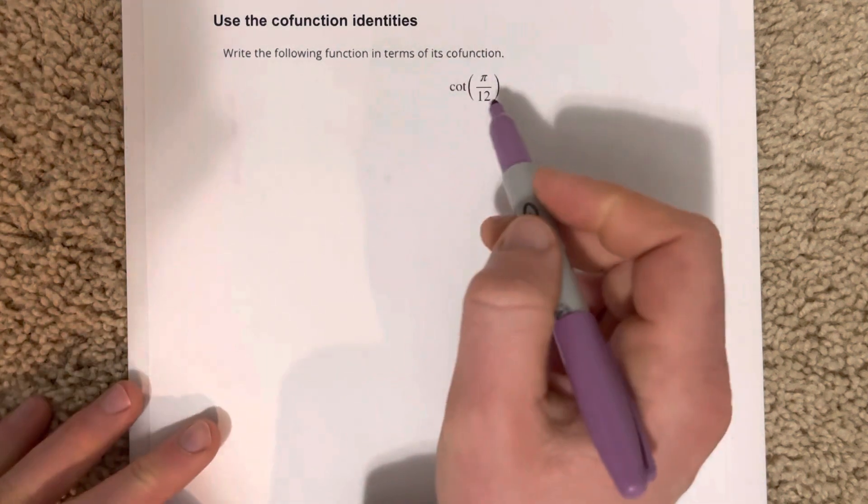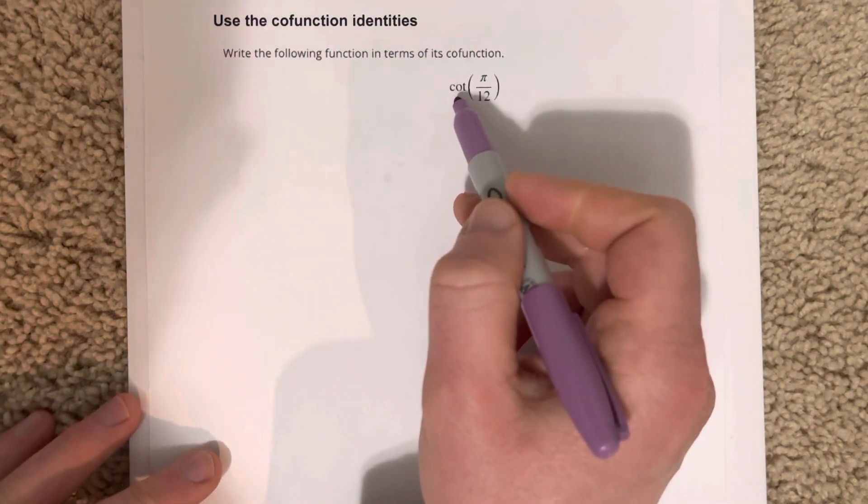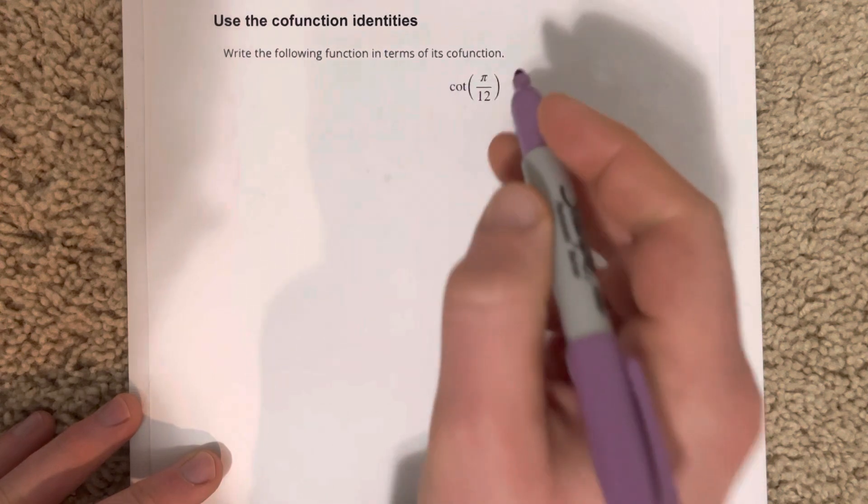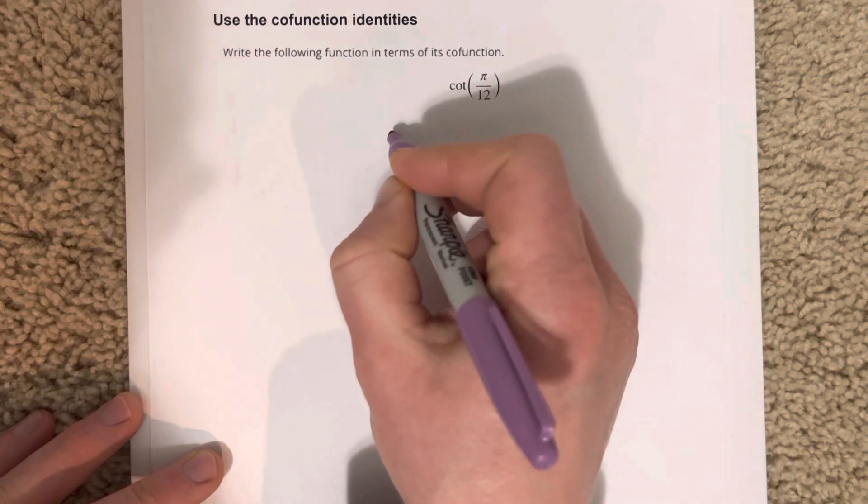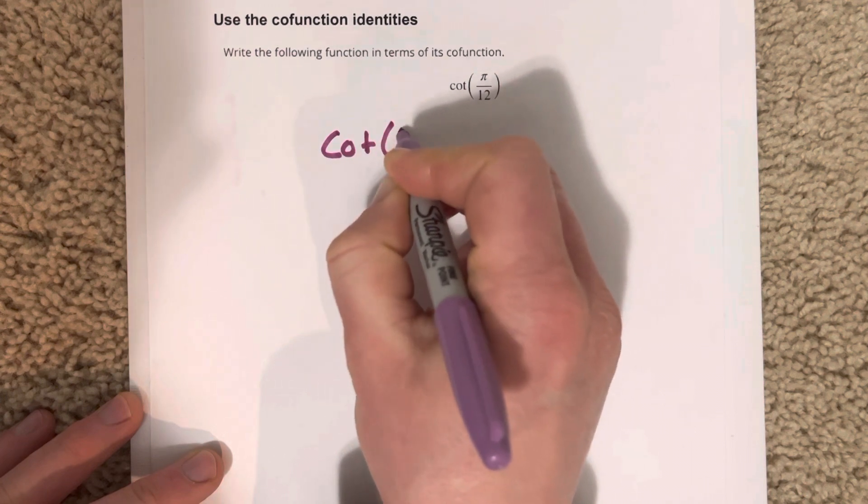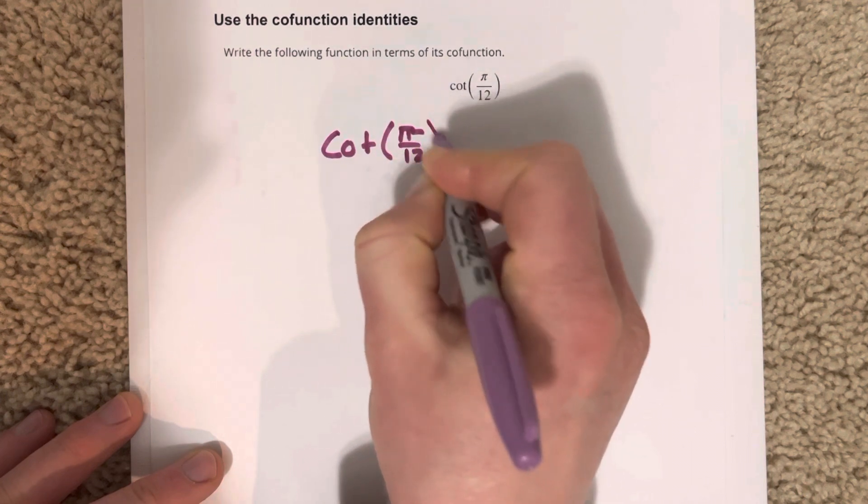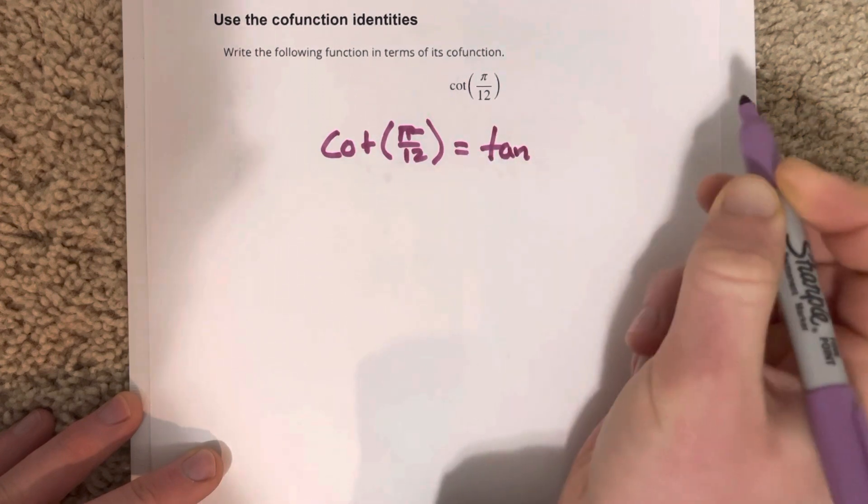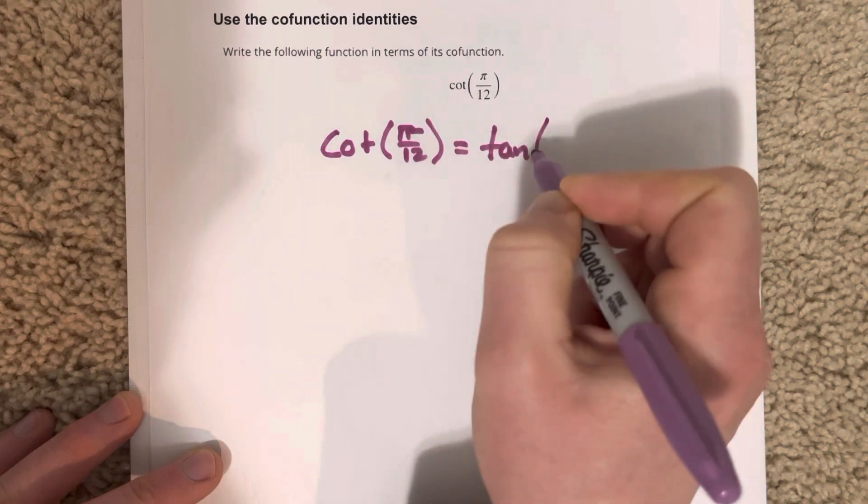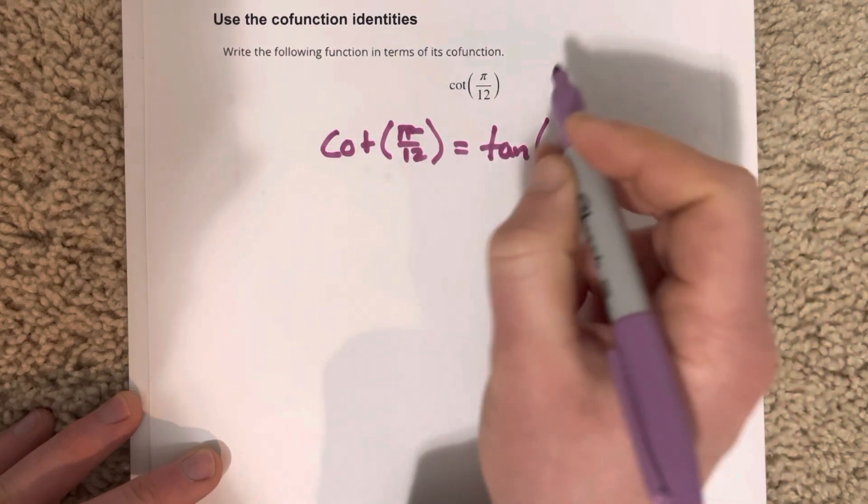Well, I know that cotangent is a cofunction with tangent. So what they want us to do is switch this or find an equivalent expression. We're going to say that cotangent of pi over 12 is actually equal to some version of tangent with pi over 12 being used.